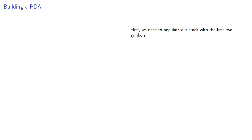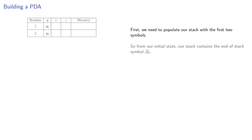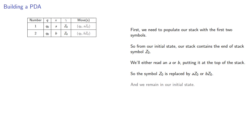First we need to populate our stack with the first two symbols. From our initial state, our stack contains the end-of-stack symbol. We'll read either an A or a B, putting it on top of the stack. The symbol Z0, that end-of-stack symbol, is going to be pushed down and replaced by either A, Z0 or B, Z0, depending on what we read, as we remain in our initial state.